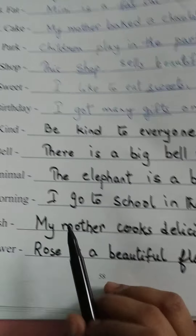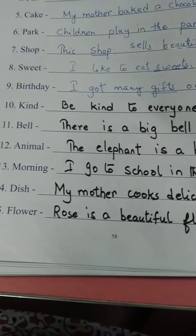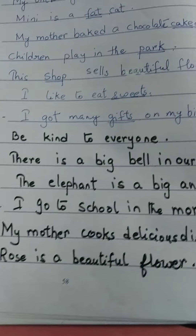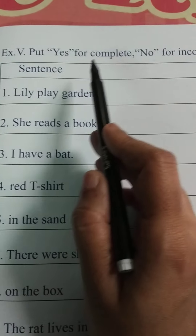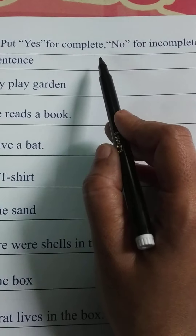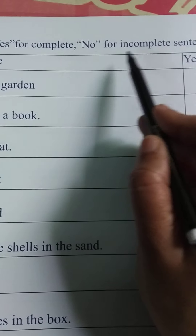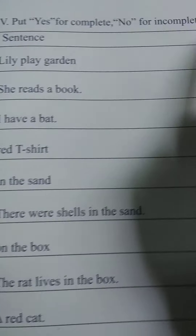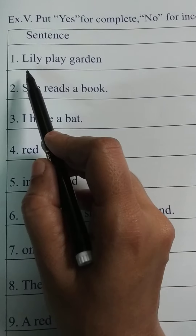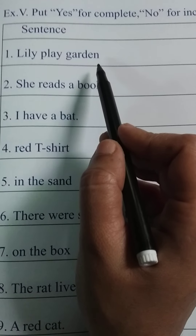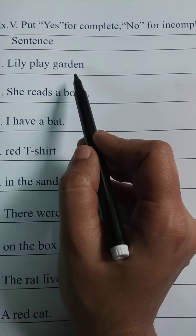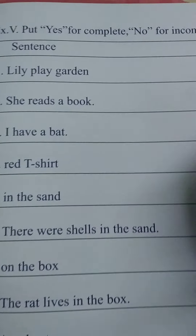You will write this in your book only. Now we will do exercise number 5: put 'yes' for a complete sentence and 'no' for an incomplete sentence. For example, 'Lily play garden' — is it a complete sentence? No. So you will write no.